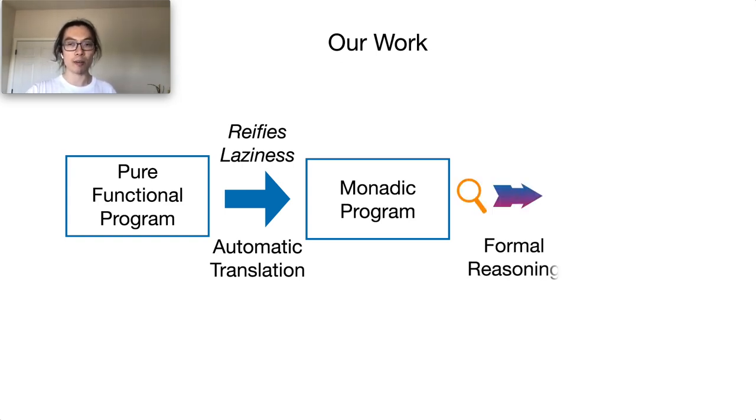And after we have these monadic programs, we can use some program logics for reasoning about the computation cost of the original program. In our work, we implement the clairvoyant monad and the program logics using the Coq specification language and the Iris proof assistant.